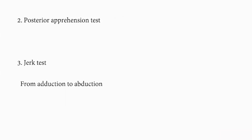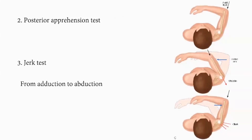Another test is the jerk test, performed sitting or supine: an axial load is applied to the elbow with adduction of the shoulder, then moving from adduction to abduction. A clunk or jerk is felt as the humeral head is relocated after having been subluxated.